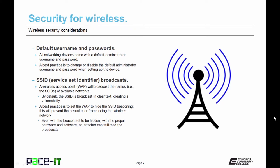A best practice is to set the WAP to hide the SSID beaconing, which will prevent the casual user from seeing the wireless network. However, even with the beacon set to hidden, an attacker with the proper hardware and software can still read those broadcasts, so hiding the SSID alone will not stop a determined hacker.